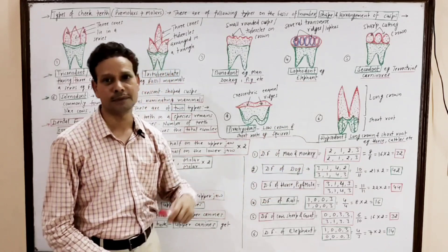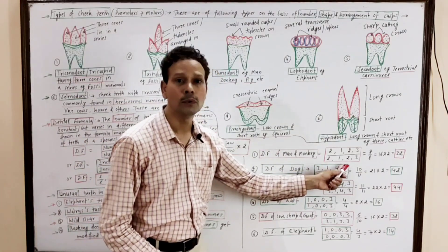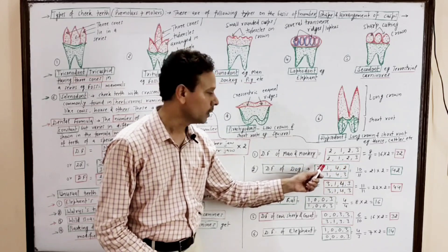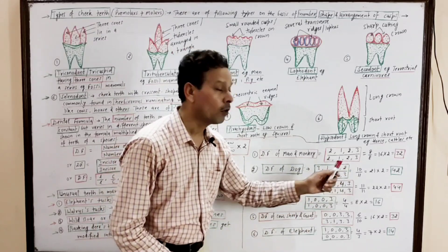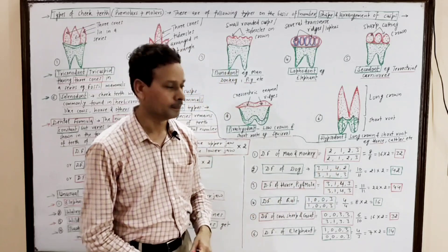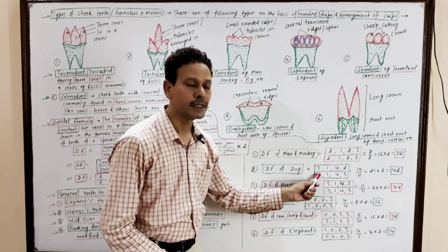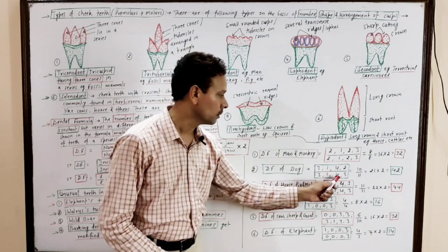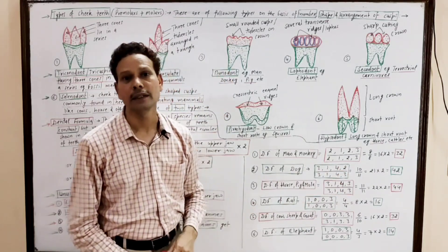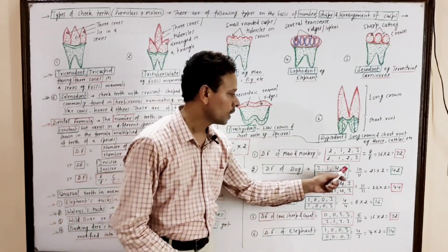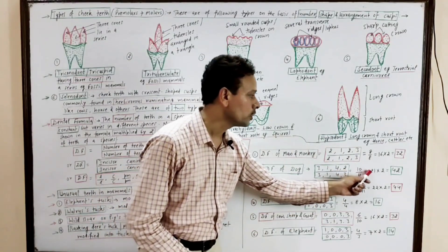The dental formula of dog: in the upper jaw it is I 3, C 1, PM 4, M 2; and in the lower jaw it is I 3, C 1, PM 4, M 3. The total dental formula of dog is 21 into two, that is 42 teeth.